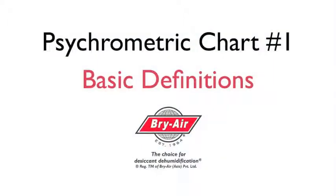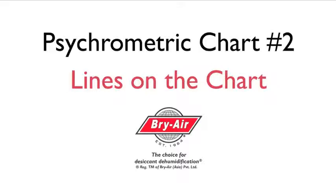In the first video we defined the terms used on the psychrometric chart. Here we'll show you where each property lies on the chart and demonstrate using the intersection of two properties to find the others.